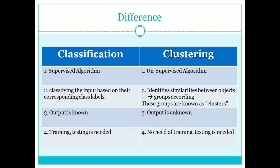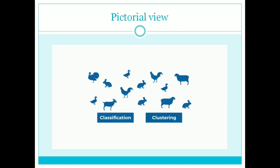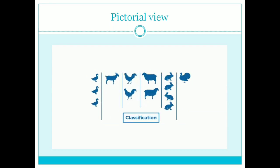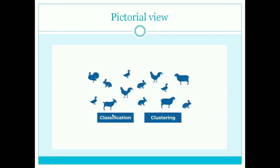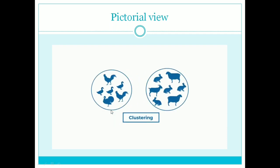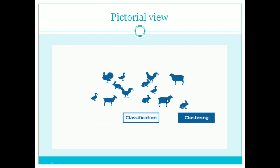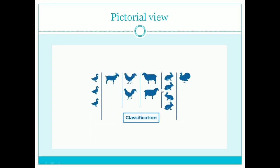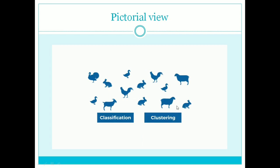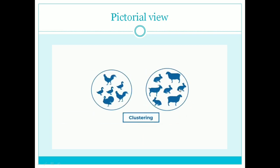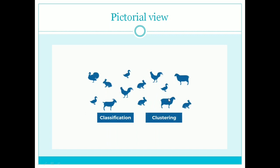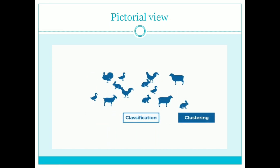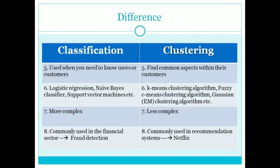Looking at the pictorial view: classification creates different classes, whereas clustering groups different types of animals together. With different animals as input, classification divides them into distinct classes while clustering groups them to form different clusters. This is the basic difference between classification and clustering.